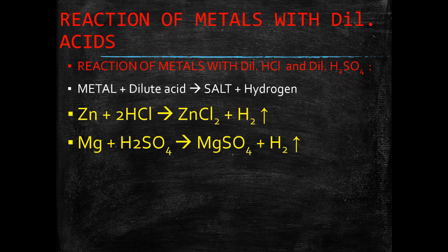All metals react with dilute sulfuric acid H2SO4 and hydrochloric acid HCl to produce salt and hydrogen gas. When zinc reacts with dilute HCl, it gives zinc chloride and hydrogen gas. Similarly, when magnesium reacts with sulfuric acid, it gives magnesium sulfate and hydrogen gas.